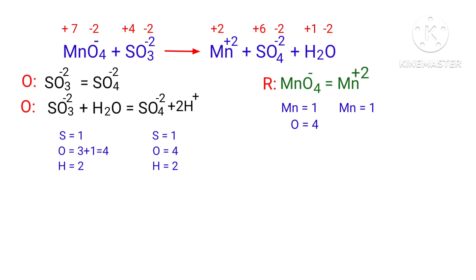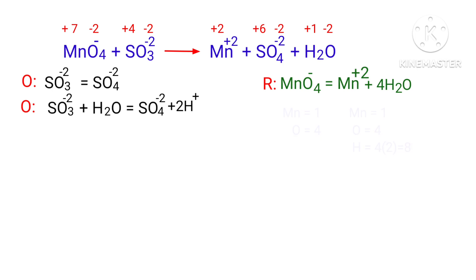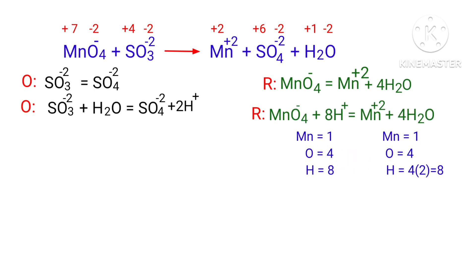The atoms in the oxidation half-reaction are now balanced. Next, balance the number of atoms in the reduction half-reaction. To balance the oxygen atoms, produce water molecules. The atoms in the reduction half-reaction are now balanced.